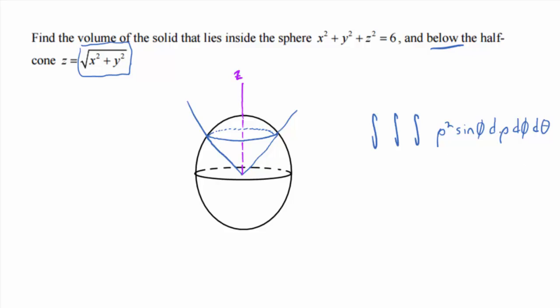What does rho have to run from? So this is going to be the volume. We're going to have to do some more work to get one of the limits of integration, but I want to point out that you can just visually inspect it and get all the limits of integration except one. So what does rho run from? Zero to root six.